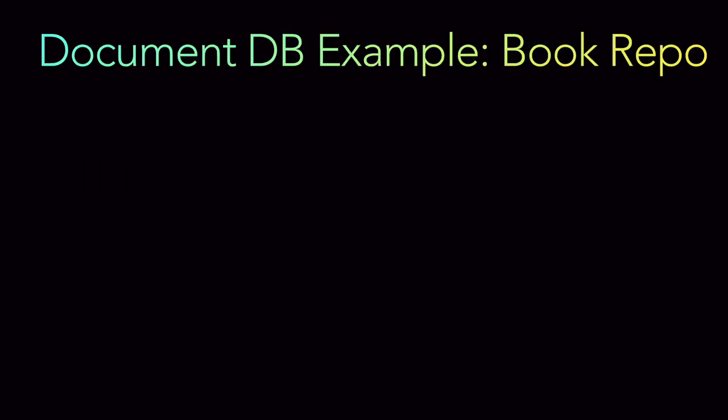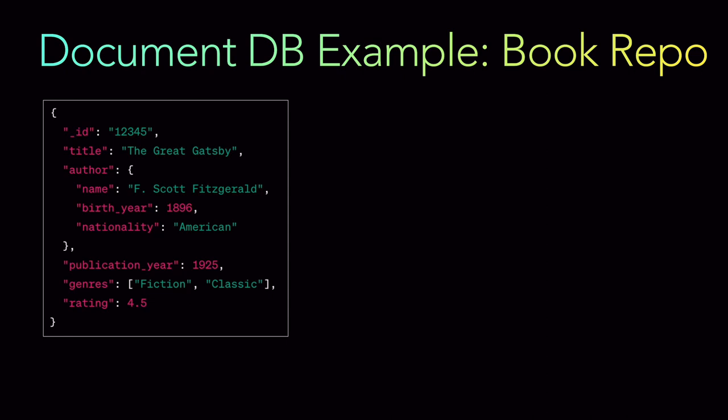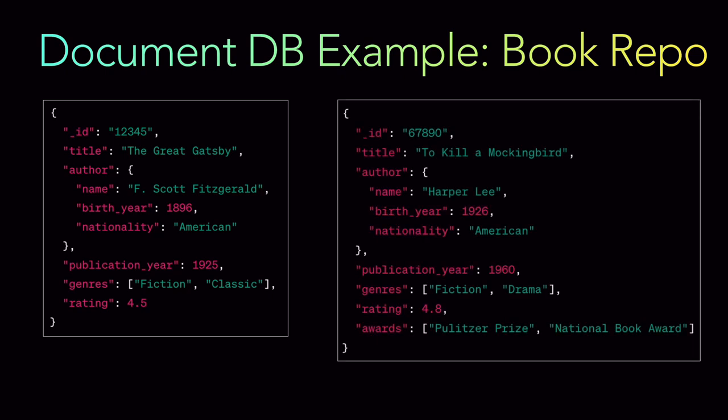Let's look at an example of a book repository. Consider a database table consisting of book records. The first record has an ID as the primary key, a title, an author field which is itself a JSON object containing name, birth year, and nationality, plus publication year, genres, and rating. A second record is similar but includes an additional field — a list of awards — which is not present in the first record.